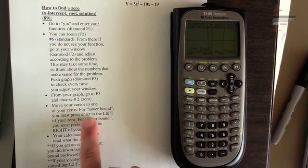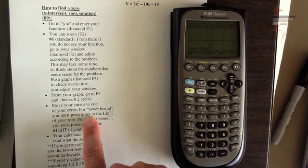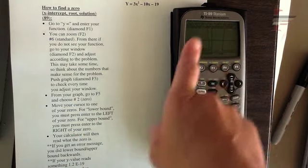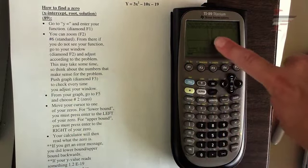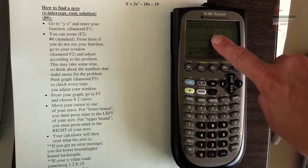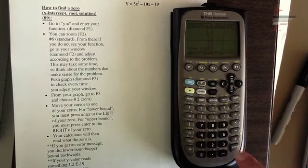Now for lower bound, you actually want to press enter to the left of your zero. So if it's opening up, it's like you follow the flow always from left to right. So to the left of, here's my zero. To the left of it, or lower bound is to the left of it. So just above it actually, and press enter.